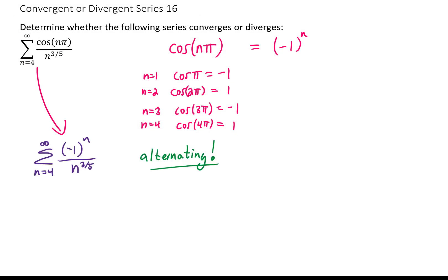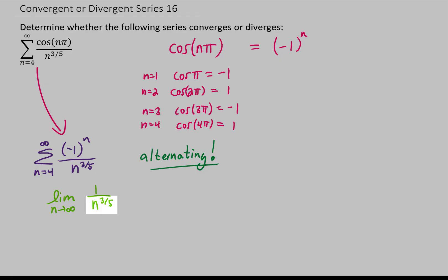Since we have an alternating series now, the only question that we have to answer is does that term inside of the series go to 0 as n goes to infinity? And the answer is pretty quickly yes. As n goes to infinity, our denominator will go to infinity, and that gives us a limit of 0.